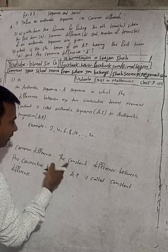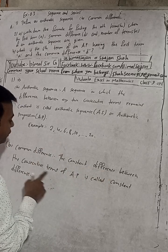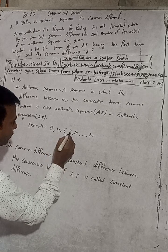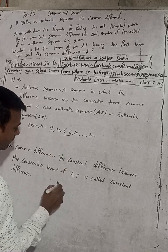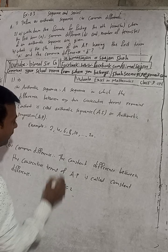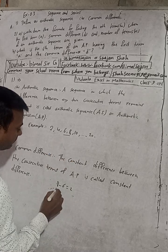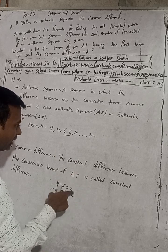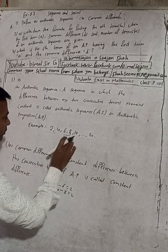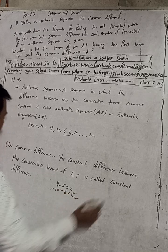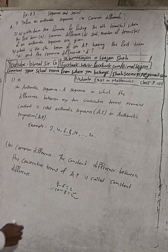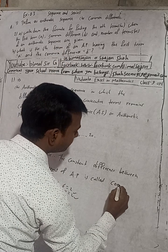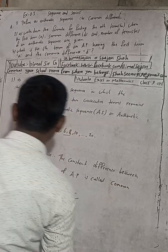The constant difference between the consecutive terms — for example, if I take 8, the consecutive term is 6, so 8 minus 6 gives 2. If I take 10, then 10 minus 8 gives 2. So the constant difference between the consecutive terms is called the common difference — not just 'constant difference' but specifically 'common difference'.